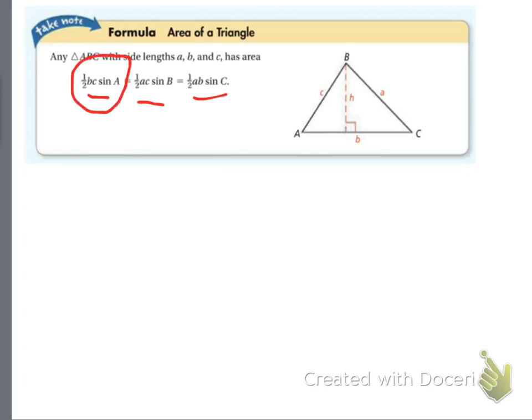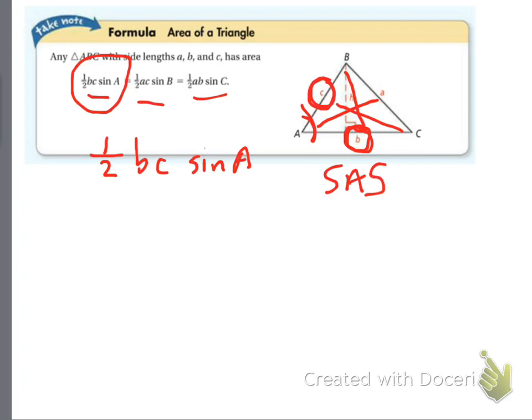It's one half times this side b times this side c. Notice how c is across from capital C, little b is across from capital B, and little a is across from capital A. Now it's one half times side b times side c times the sine of A. Notice this is side-angle-side. If you remember back from geometry, if you have side-angle-side and you know all three of those measures, you can find the area of a triangle this way. The same thing works for C, A, and angle B, and for A, B, and angle C.